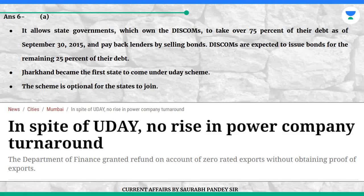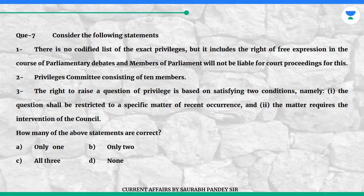Question 7: Consider the following statements. Statement 1: There is no codified list of the exact privileges, but it includes the right of free expression in the course of parliamentary debates, and members of parliament will not be liable for court proceedings for this. Statement 2: Privileges Committee consisting of 10 members. Statement 3: The right to raise a question of privilege is based on satisfying two conditions: (i) the question shall be restricted to a specific matter of recent occurrence, and (ii) the matter requires the intervention of the council.